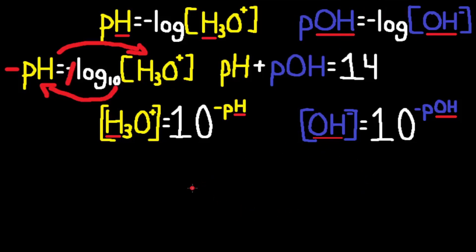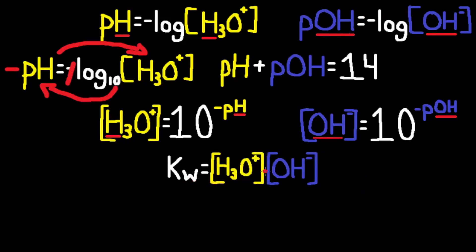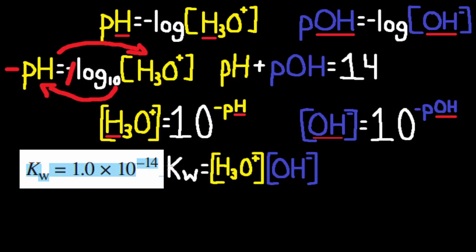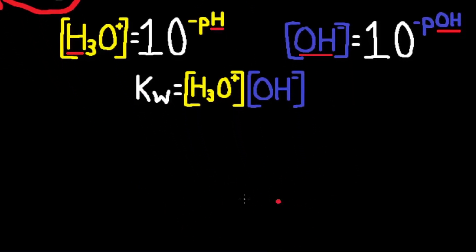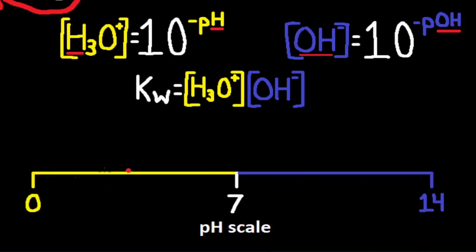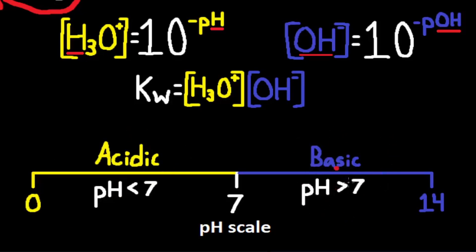The last formula we need to know is KW is equal to the concentration of H3O+ multiplied by OH-. KW is the water ionization constant, given in the data booklet. So if we have H3O+ or OH-, we can solve for the other one. The pH scale typically ranges from 0 to 14. A pH less than 7 is acidic, greater than 7 is basic, and equal to 7 is neutral.